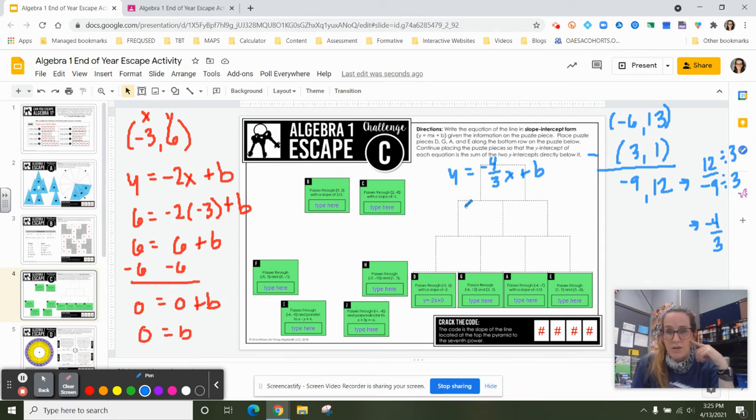But negative 6 and 13 would work too. So 1 equals negative 4 thirds times 3 plus b.